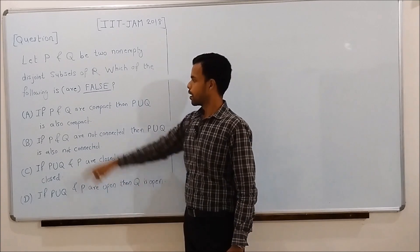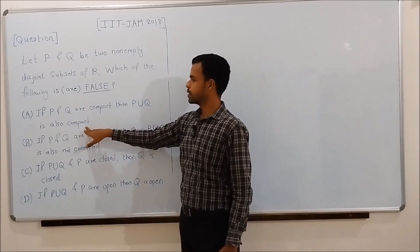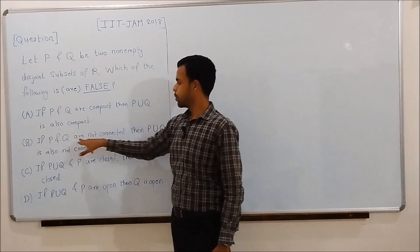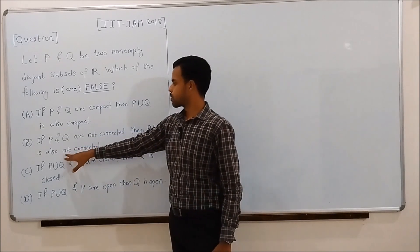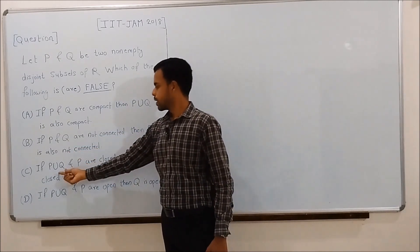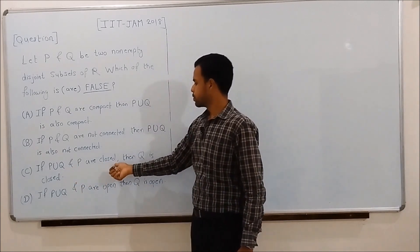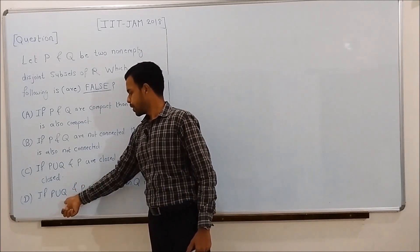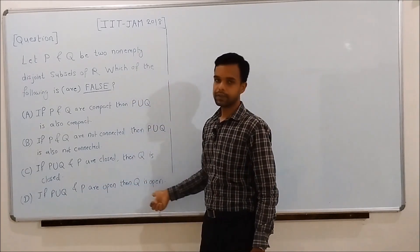The options are: Option A — if P and Q are compact, then P union Q is also compact. Option B — if P and Q are not connected, then P union Q is also not connected. Option C — if P union Q and P are closed, then Q is closed. Option D — if P union Q and P are open, then Q is open.